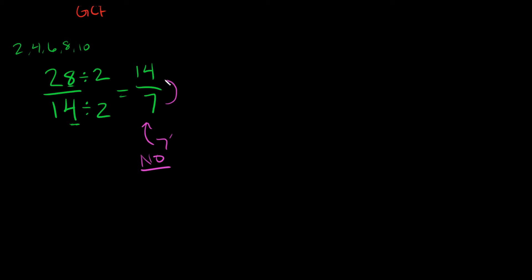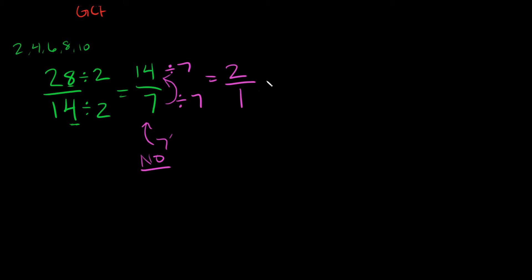Why? Because seven fits into 14 evenly — twice. So we can divide the bottom by seven and the top by seven. Fourteen divided by seven is two, and seven divided by seven is one. So we have two over one. Two over one is the same as two divided by one, which is just two.